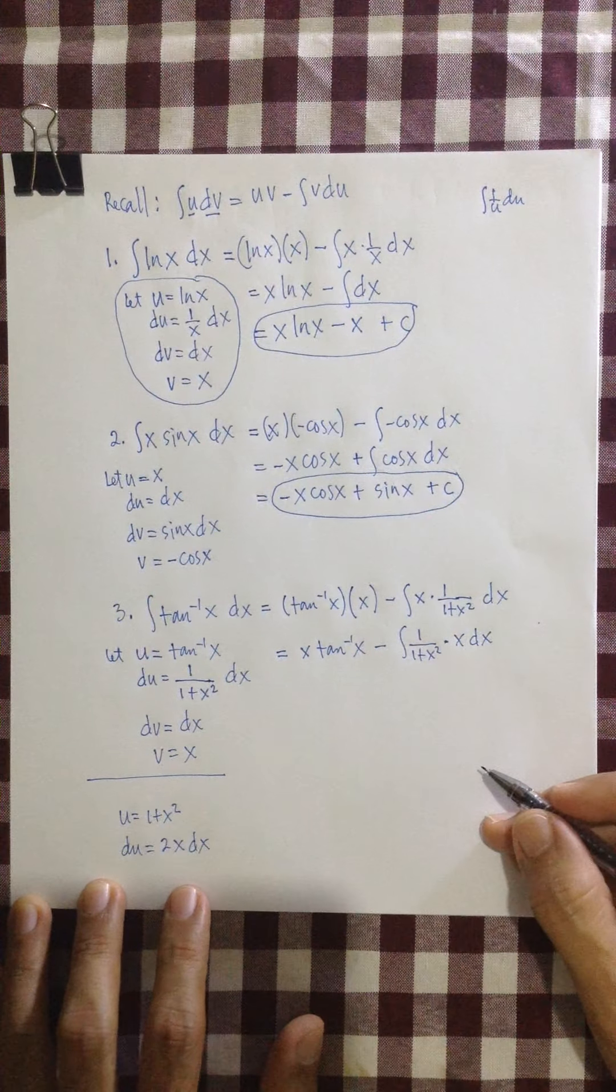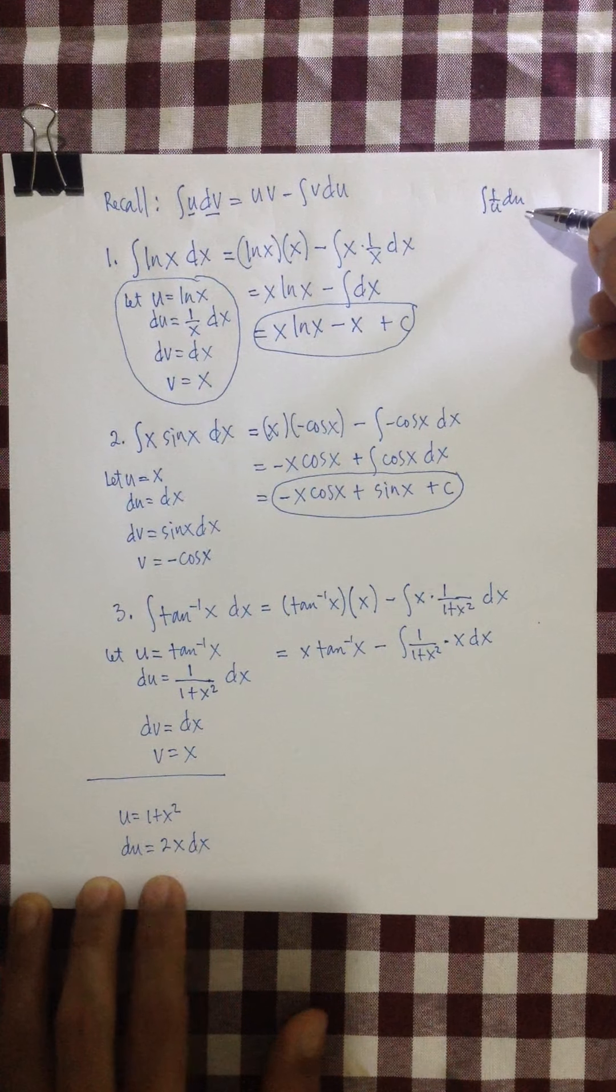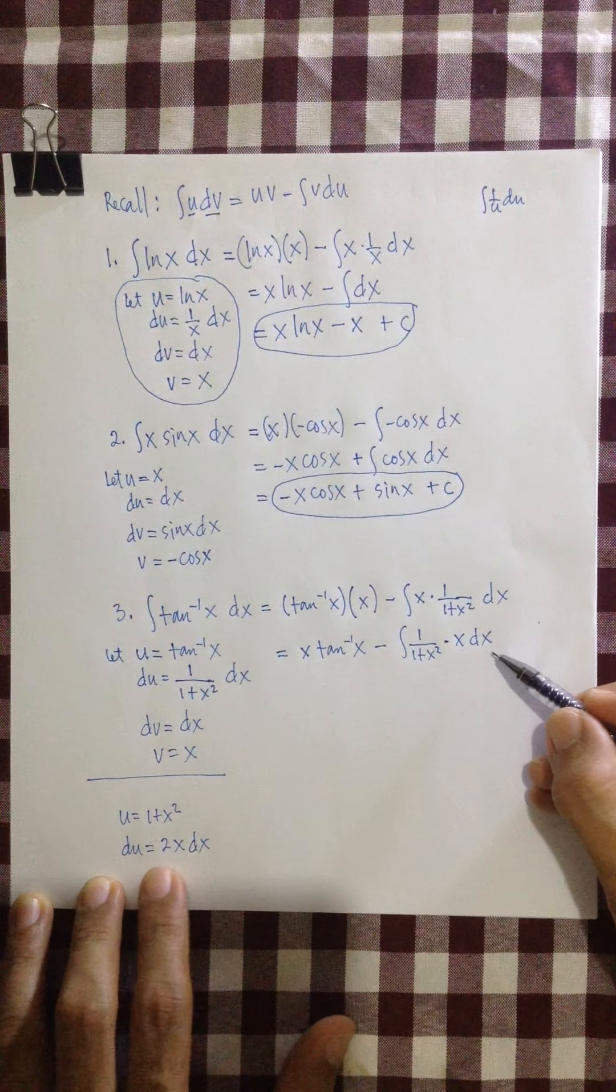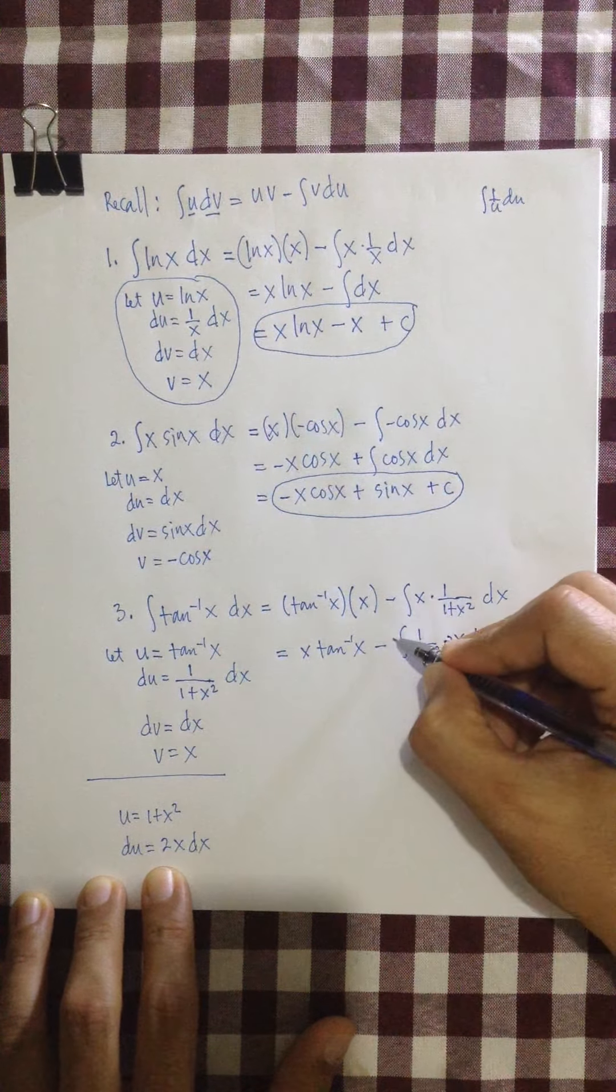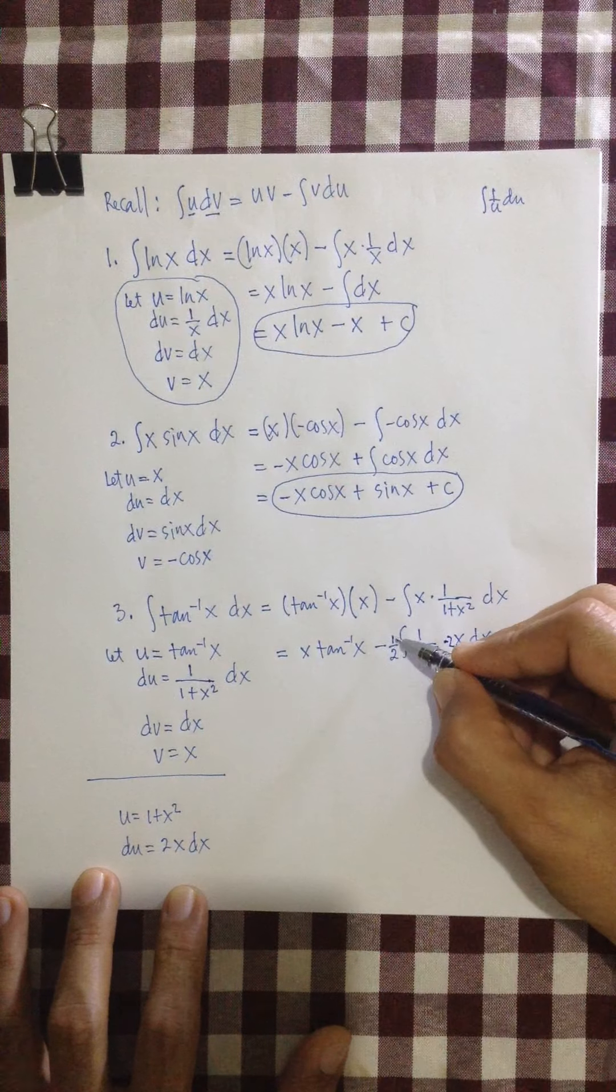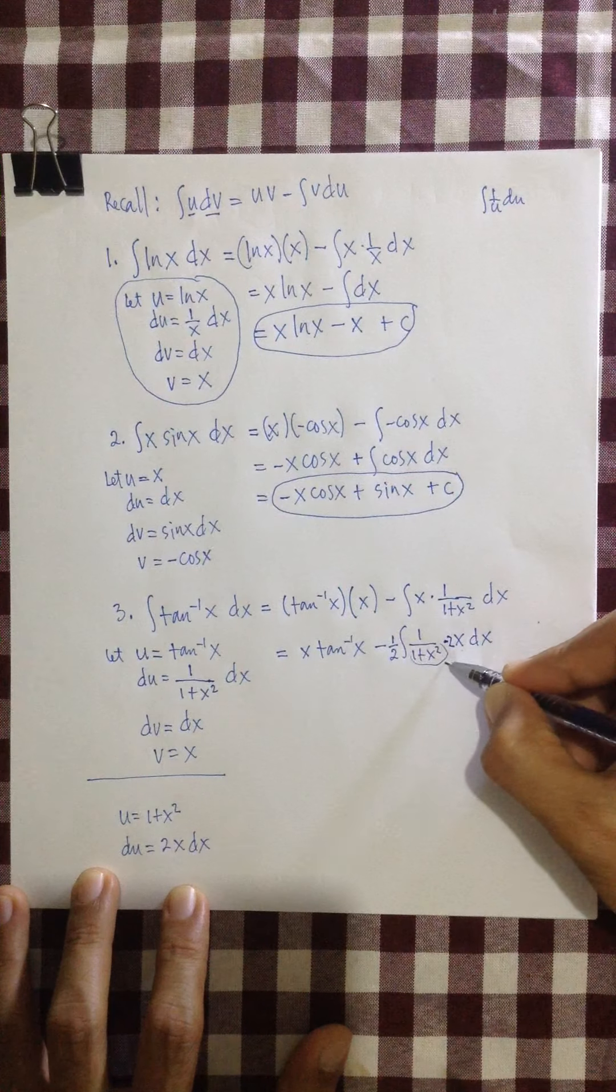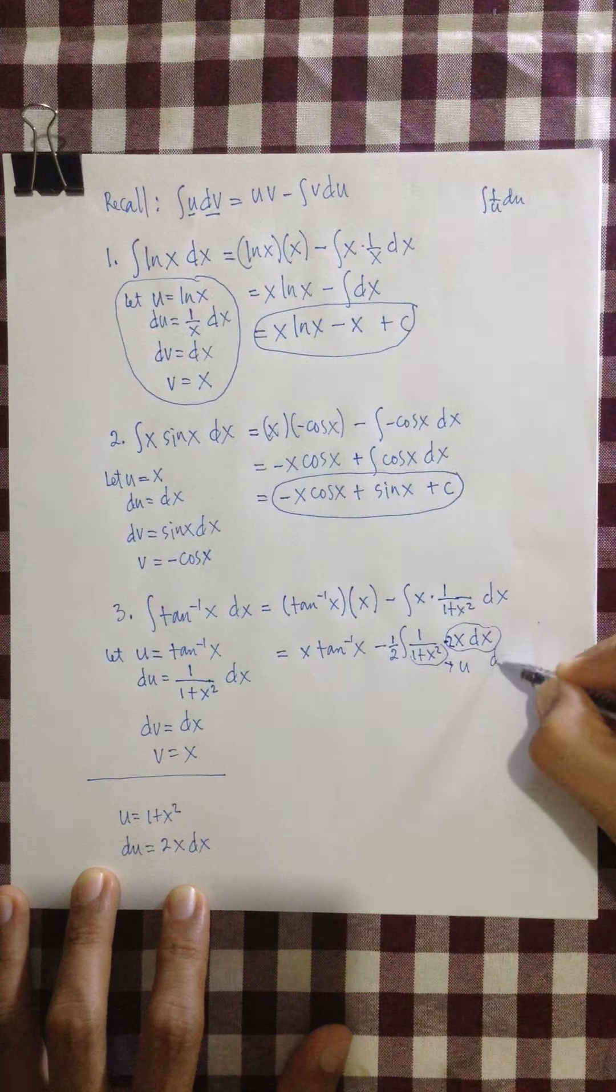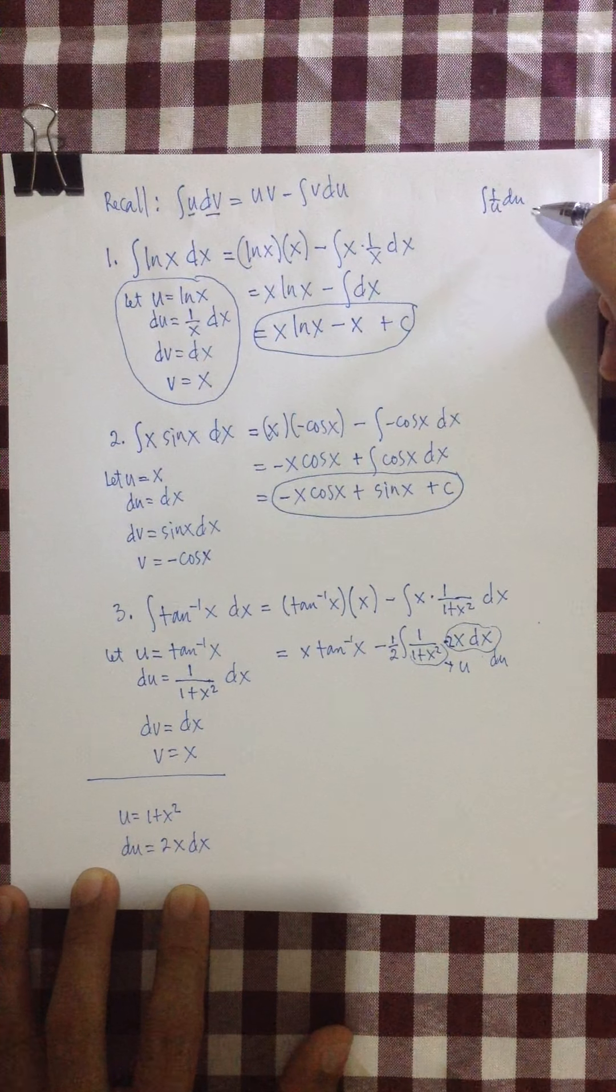Now, it says this formula requires that the du must be present. But the du is 2x dx. Here, we have x dx. But we don't have the 2. So what we're going to do is to multiply this by 2. But remember to multiply outside with 1 half. So that you have 1 half integral of 1 over 1 plus x squared, which is actually your u, and the 2x dx, which is actually your du.